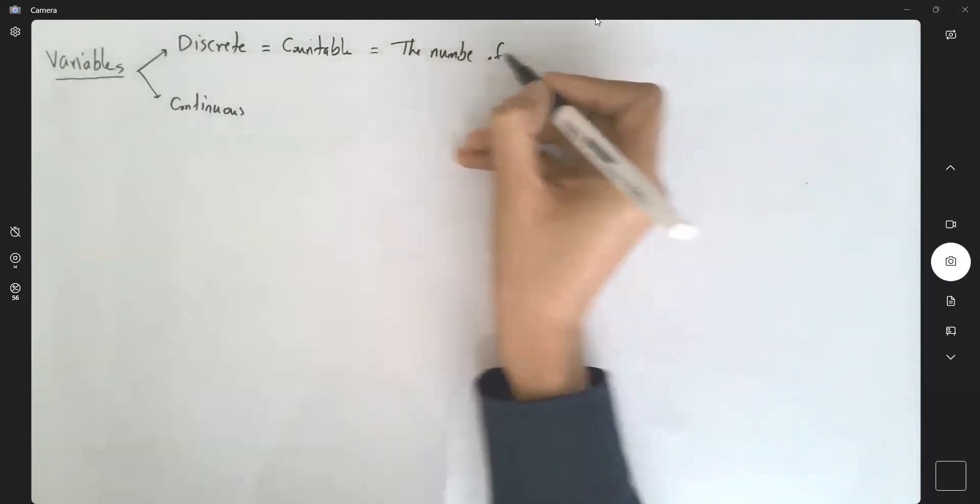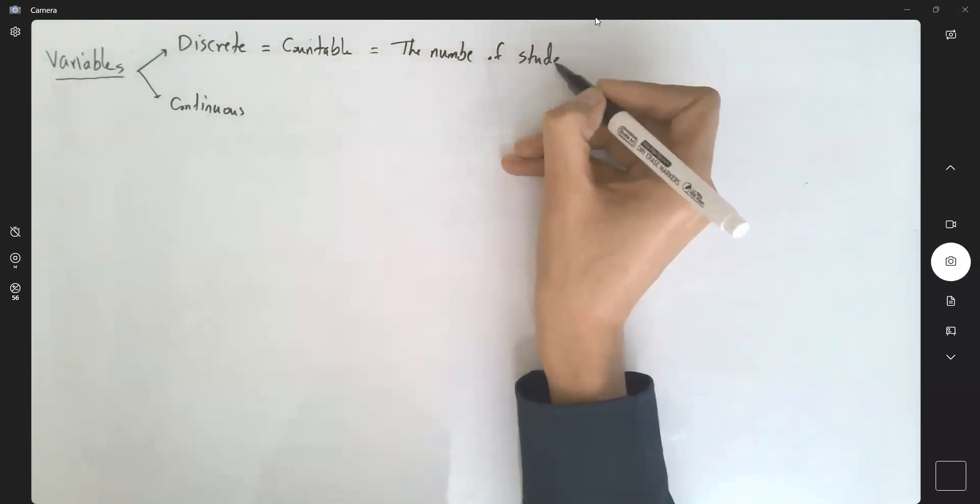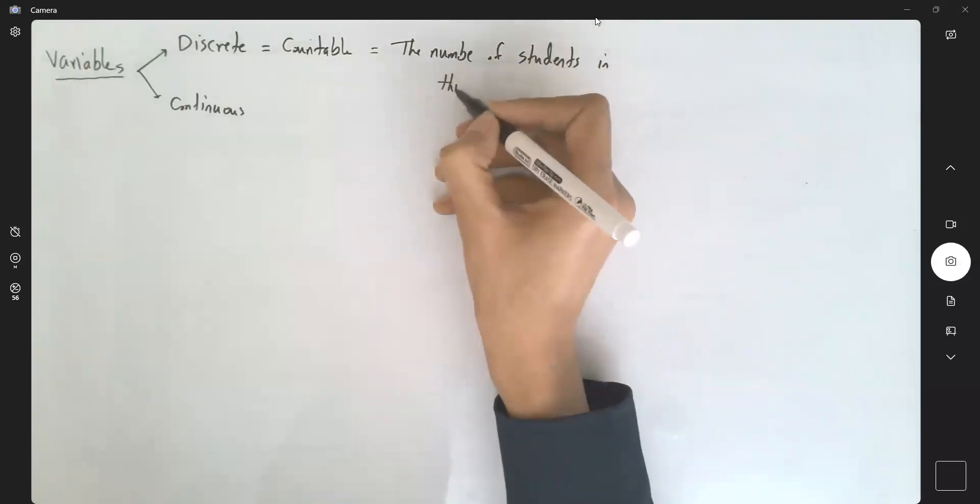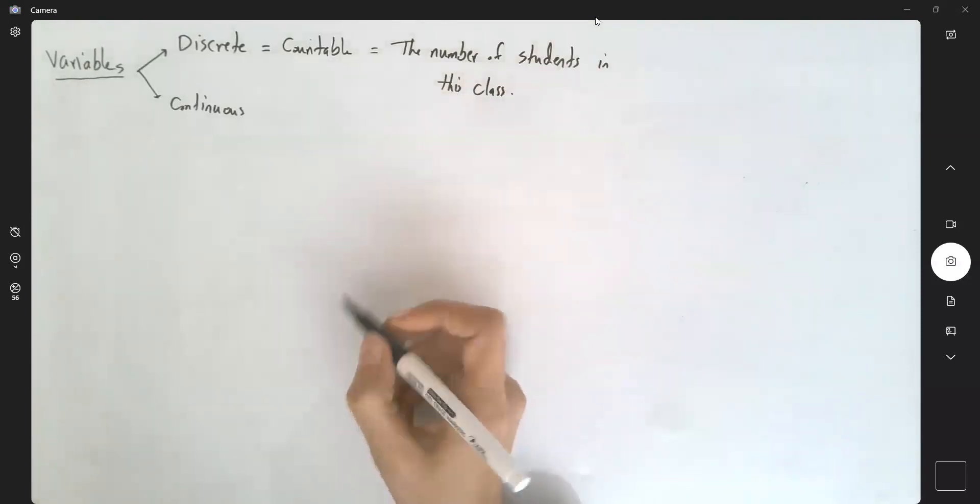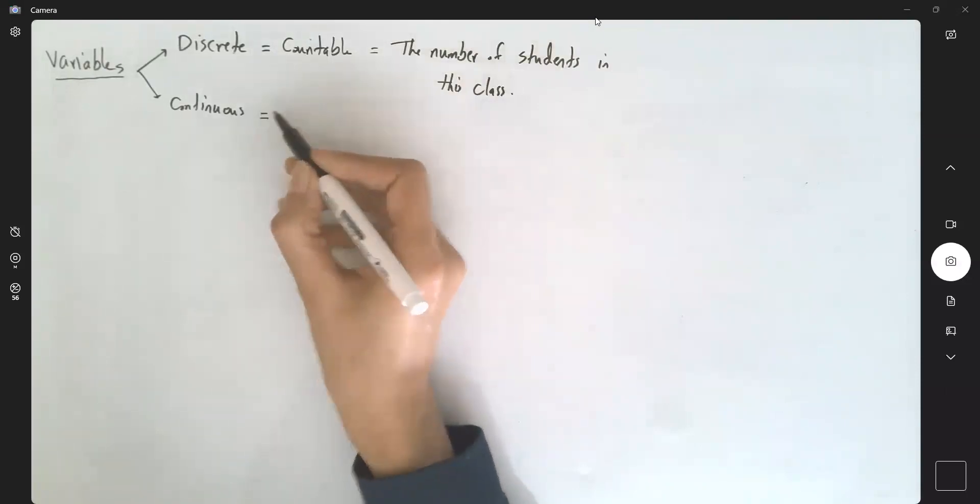The number of students in this class. The variable is continuous if it's uncountable.